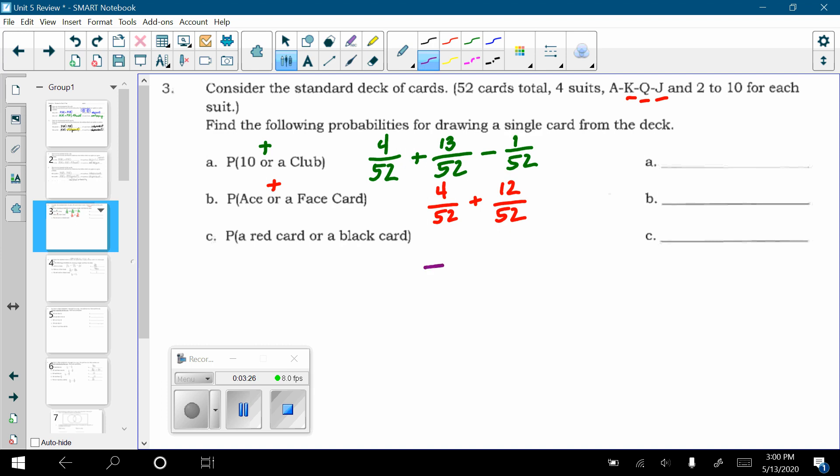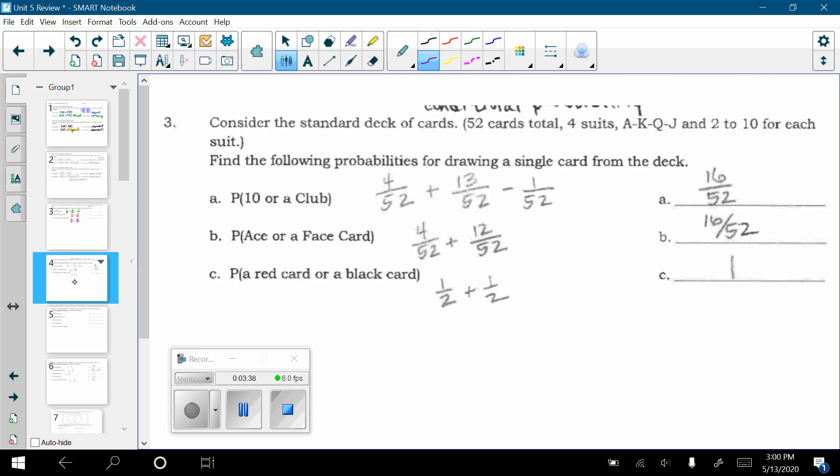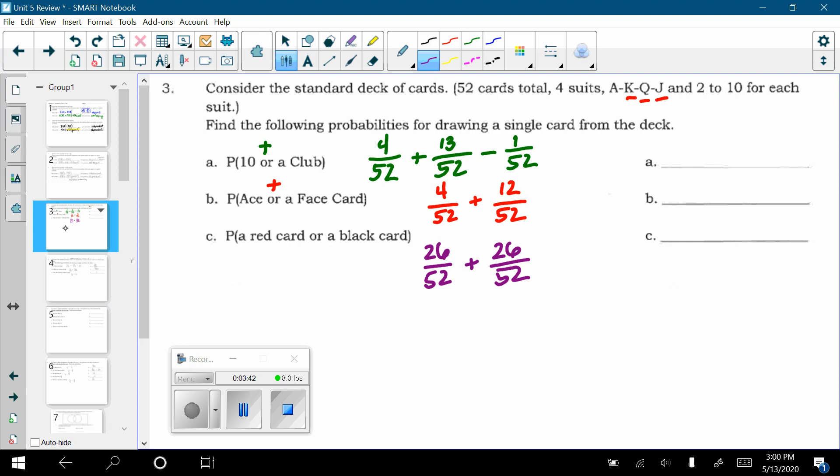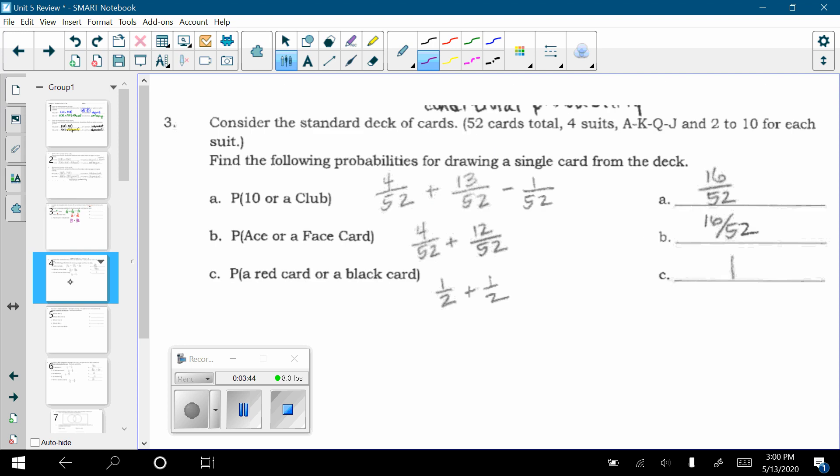And in the last one, red cards, half the deck is red, or 26 cards, or black cards. Are there any cards that are both red and black at the same time? Nope. So, here are my computational answers from what you just saw, right? It's the same work, but I just have answers.